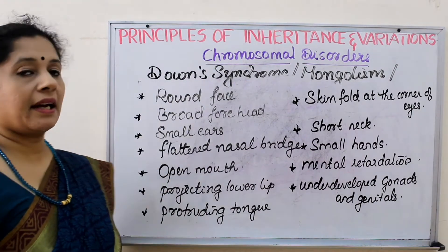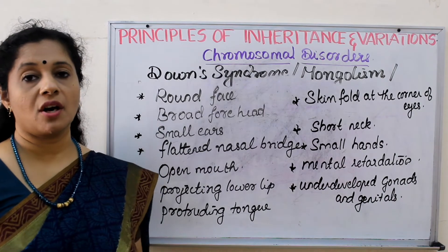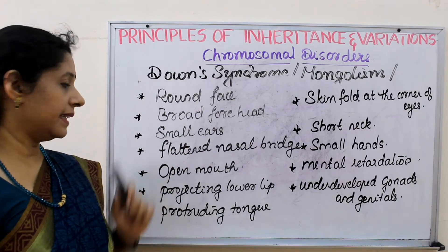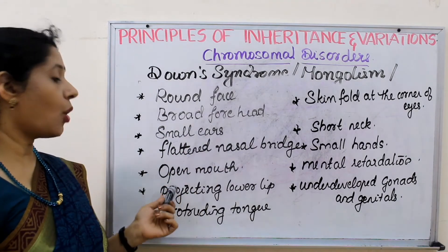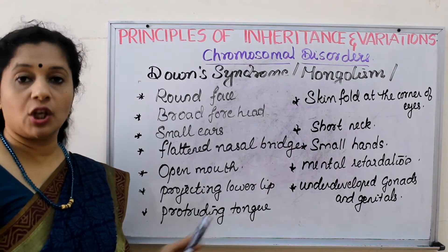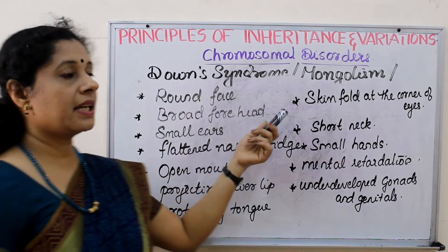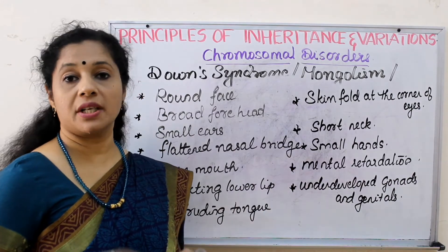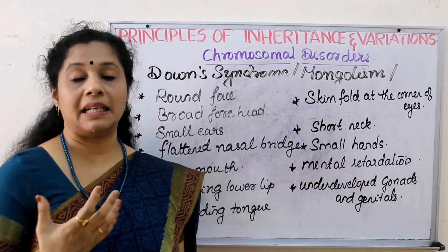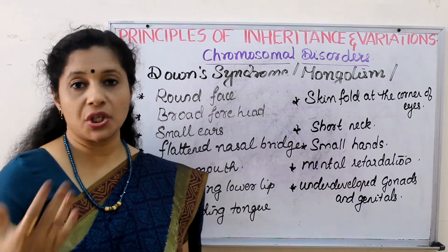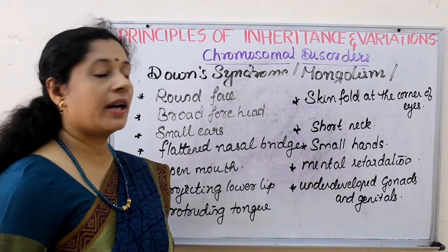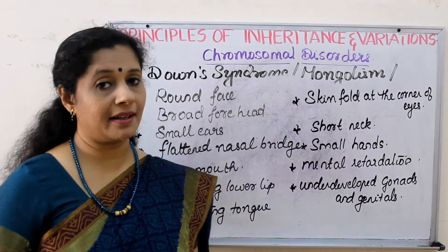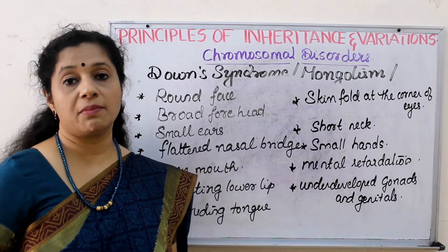Now let us discuss the symptoms of Down syndrome. These people have a round face — that is why it is called a moon face or Mongolian disease. Then broad forehead, small ears, flattened nasal bridge, open mouth — most of the time they keep their mouth open — projecting lower lip, protruding tongue, skin fold at the corners of their eyes, short neck, and small hands. Mental retardation is a characteristic feature; they don't have mental development like normal people and their IQ is very low. Social abilities are very less. Then underdeveloped gonads and genitals, so they may be sterile. Most of them have a chance of congenital heart diseases, or they may end up with Alzheimer's disease or leukemia.